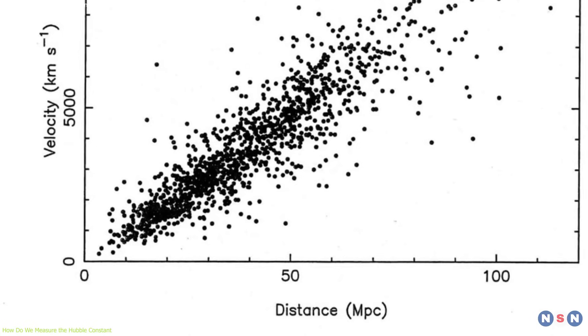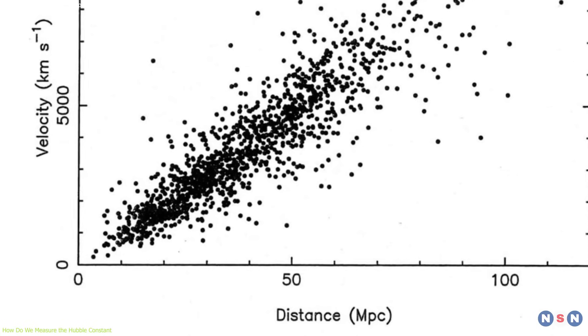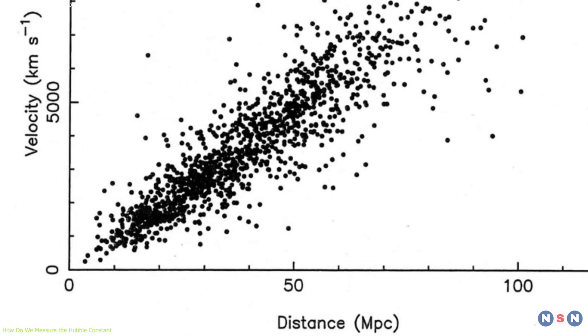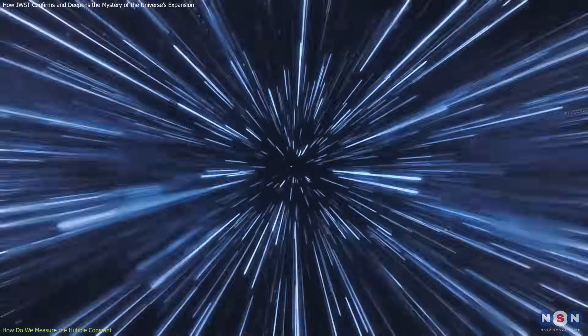The Hubble constant tells us how fast this expansion is happening, and it can be expressed as kilometers per second per megaparsec, which is a unit of distance equal to about 3.26 million light-years.